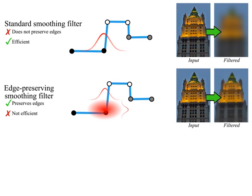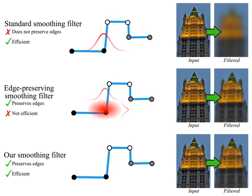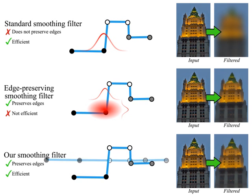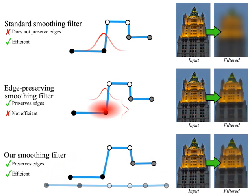In this paper, we present a new approach for performing edge-preserving filtering. Our key observation is that if the distances between samples in the high-dimensional space are preserved in a space of lower dimensionality, many spatially invariant filters in this new space will also be edge-preserving.